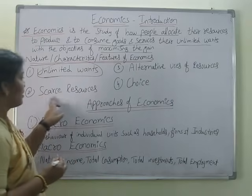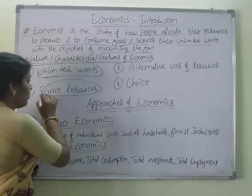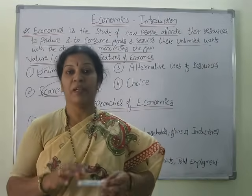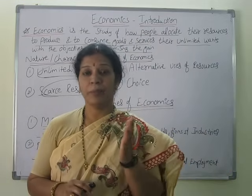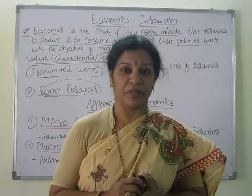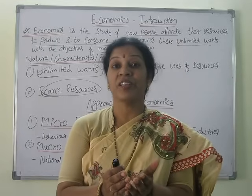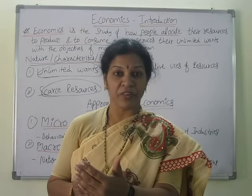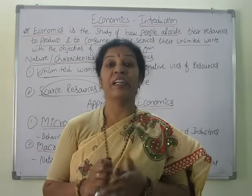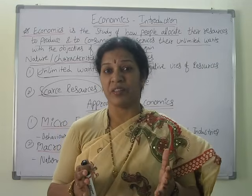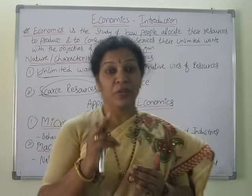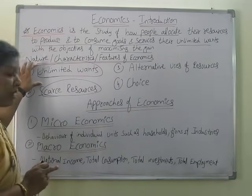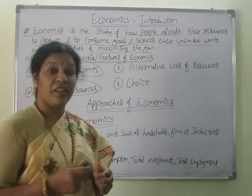The second feature is scarce resources — our resources are worryless, resources are less, wants are more. A simple example: an employee's salary is 20,000. This is his resource. And wants are unlimited — want to buy a house, want to buy a vehicle, want to go to a hi-fi restaurant, want to go for tours. So when wants are unlimited, how can we allocate? Resources are scarce, wants are unlimited.